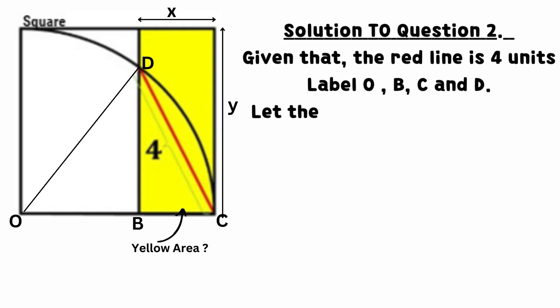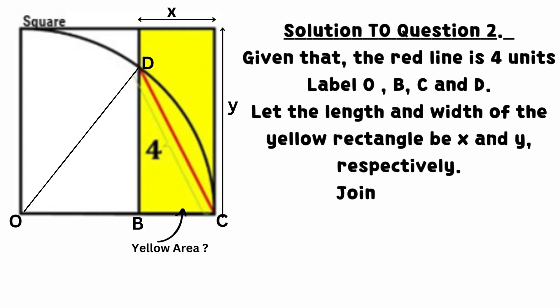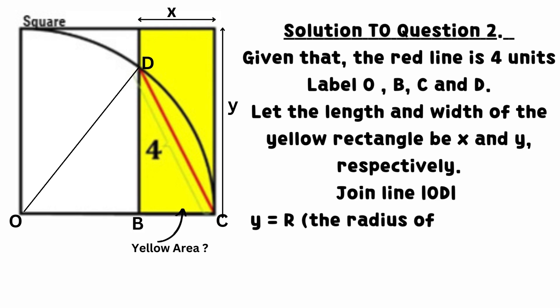For the solution to question 2: given that the red line is 4 units, label O, B, C, and D. Let the length and width of the yellow rectangle be X and Y respectively. Join line OD. Y equals R, which is the radius of the quarter circle.